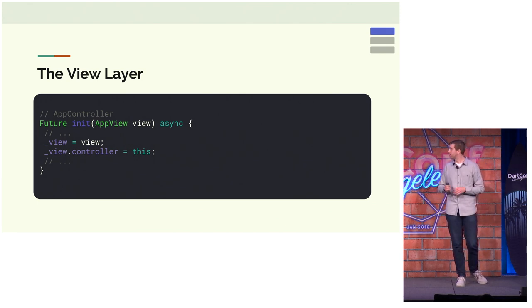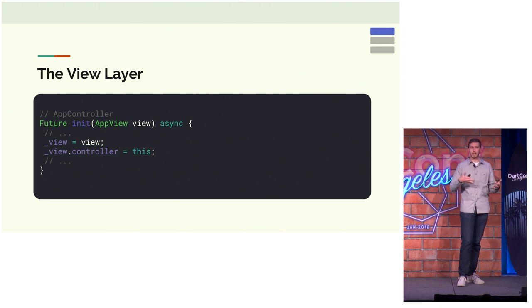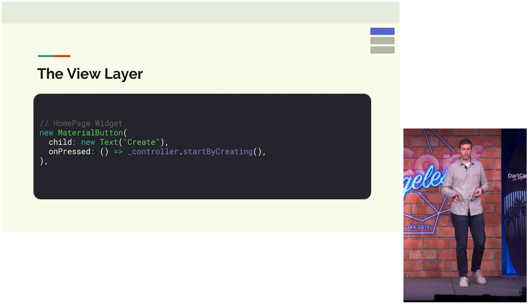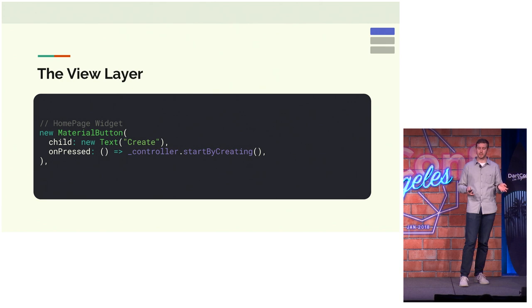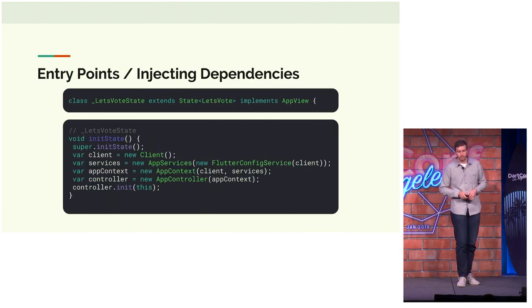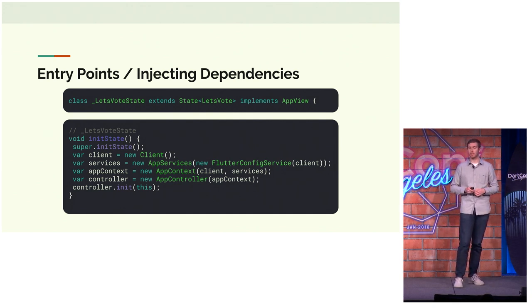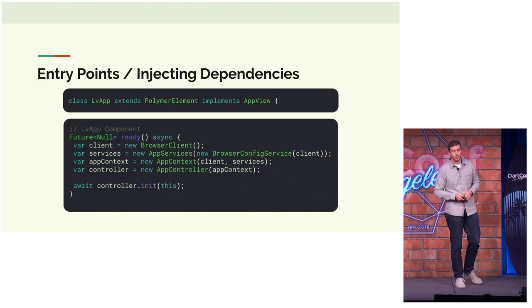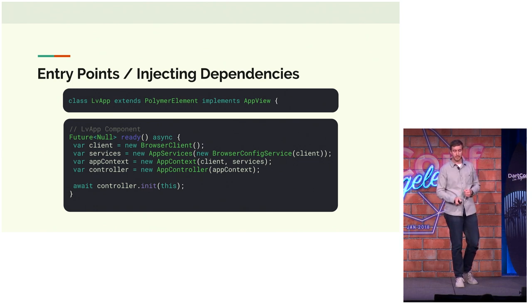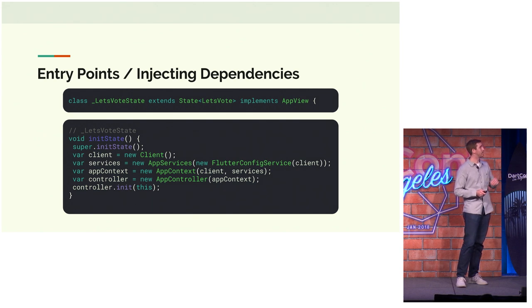For our view layer, we need to wire up the two-way relationship between the view and its presenter — the controller. We call init in our app controller, and that'll expect an app view. In our Flutter app, we can call things like controller start by creating, which will call the presenter and create the election. On web, we can do the same thing. To make that work, we implement our app controller using various pieces; the only piece that's different is the HTTP client. On Flutter we use a regular IO client, and on web we use a browser client. The components implement app view and on Flutter the state object implements the view.